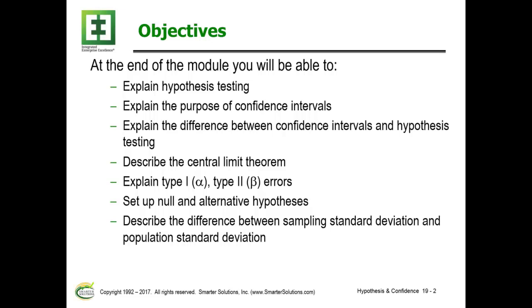You'll be able to describe the central limit theorem, explain type 1 — that's alpha risk — and type 2, which is beta risk errors. You'll also set up a null and an alternate hypothesis, and determine the difference between sampling standard deviation and population standard deviation.